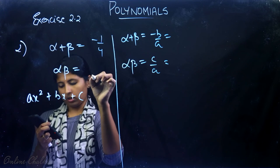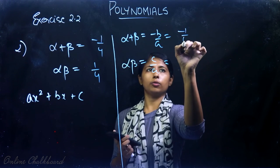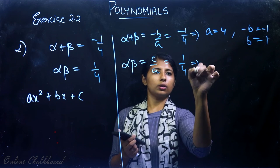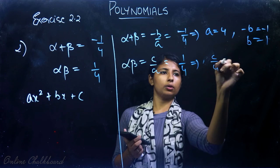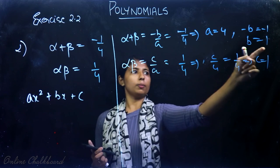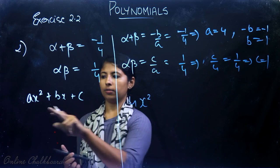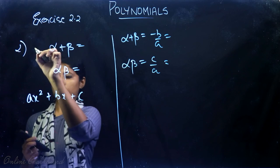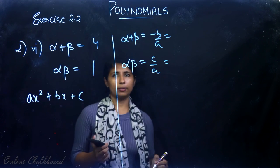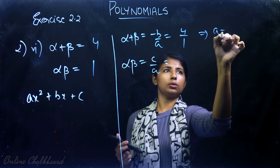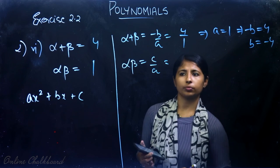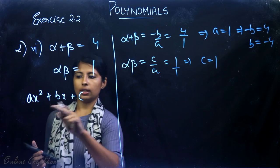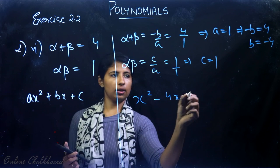Question 5: sum = -1/4 and product = 1/4. Comparing α + β = -b/a = -1/4, we get a = 4 and b = 1. Since α·β = c/a = 1/4 and a = 4, we get c = 1. The polynomial is 4x² + x + 1. Question 6: sum = 4 and product = 1. Comparing: a = 1, b = -4, c = 1. The required polynomial is x² - 4x + 1.